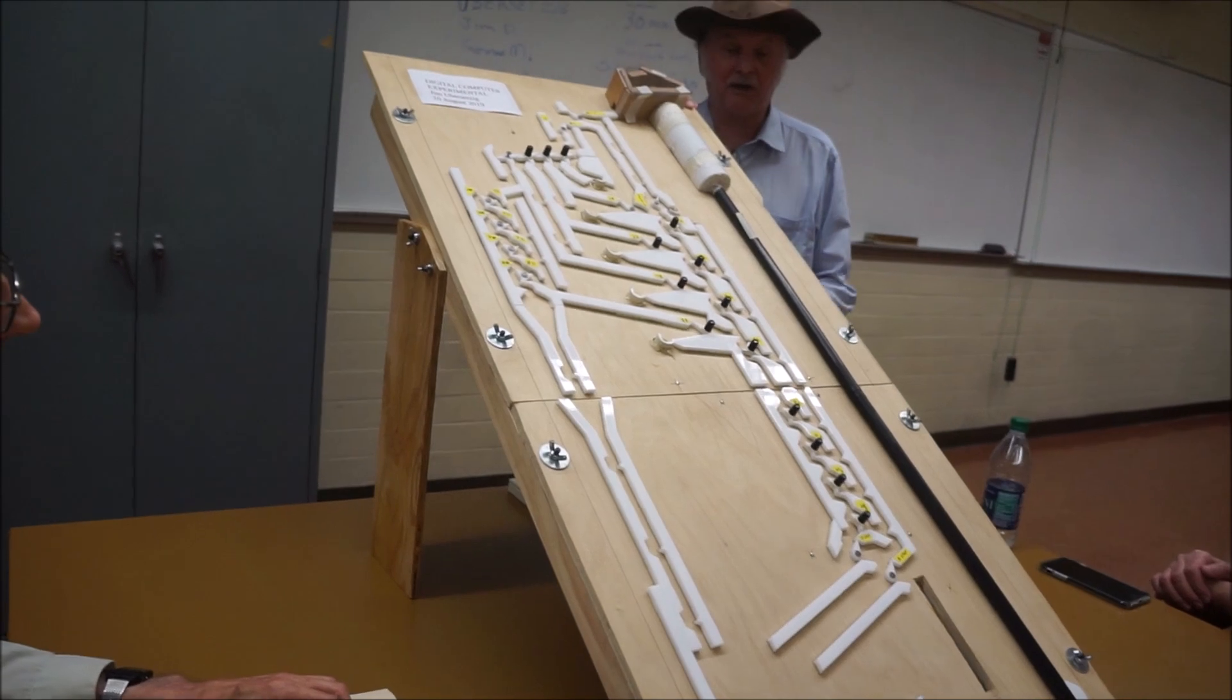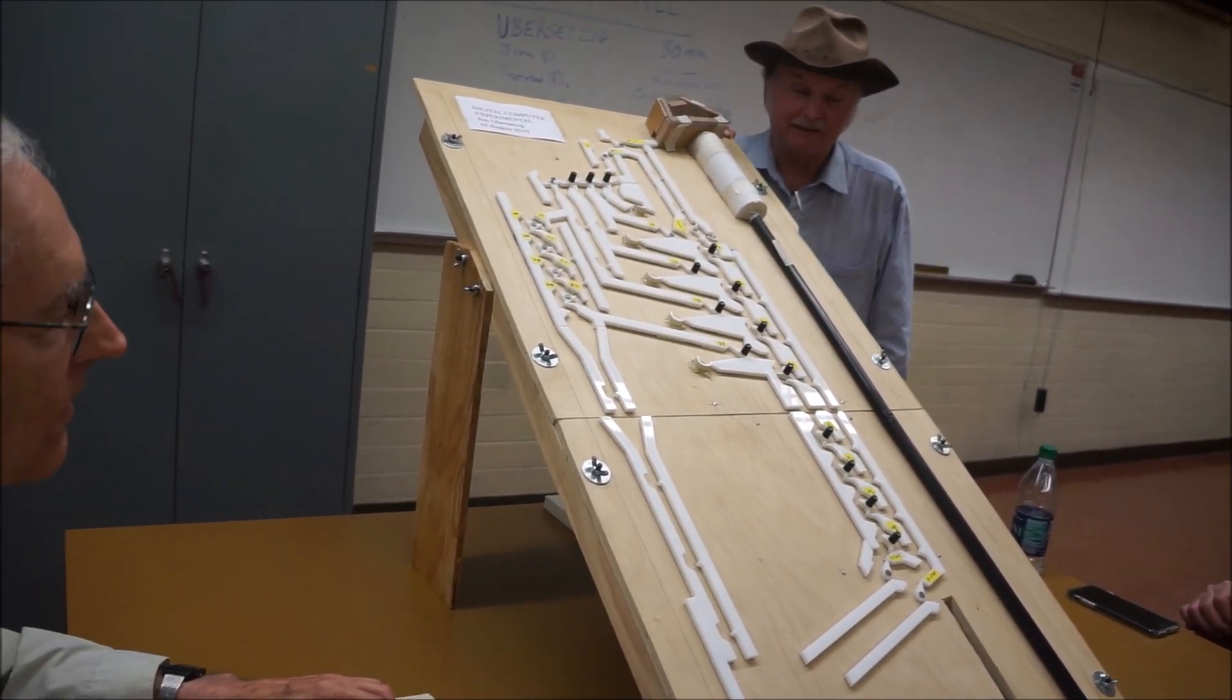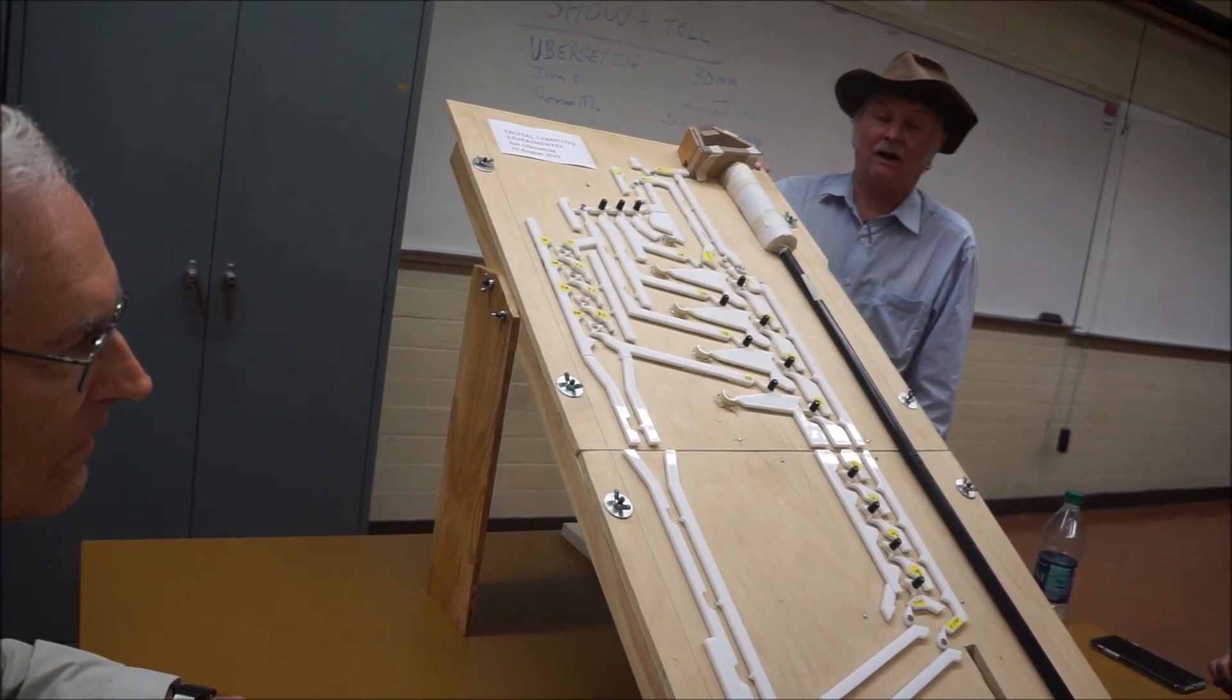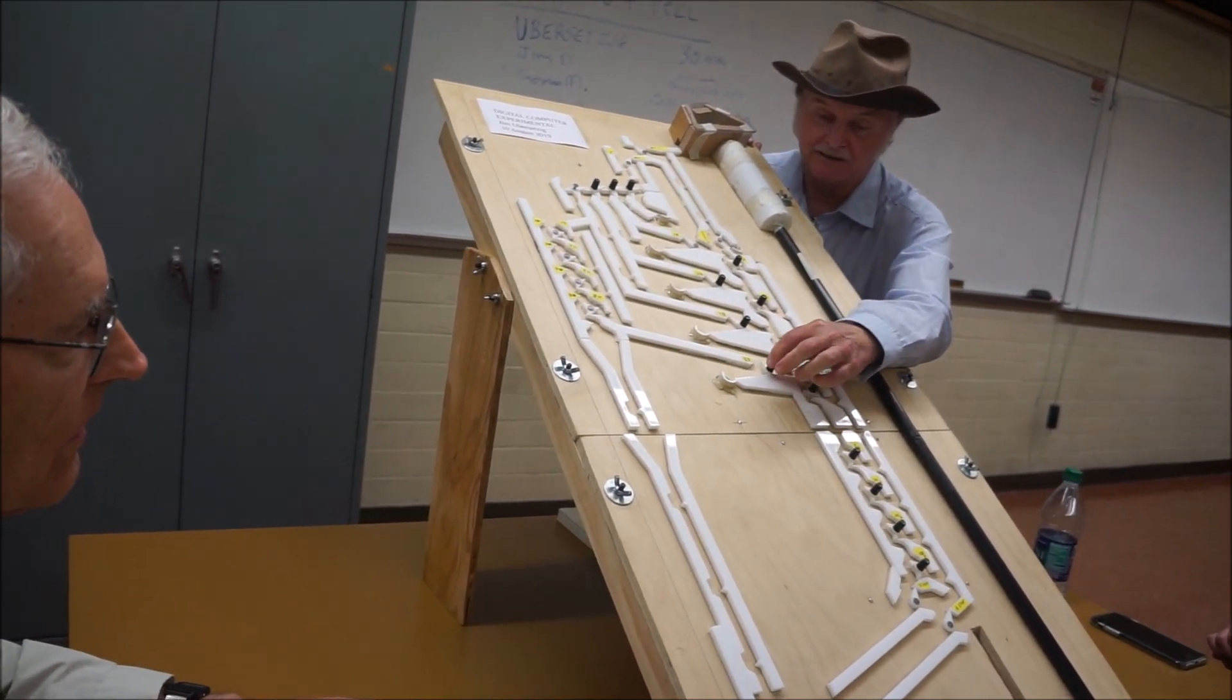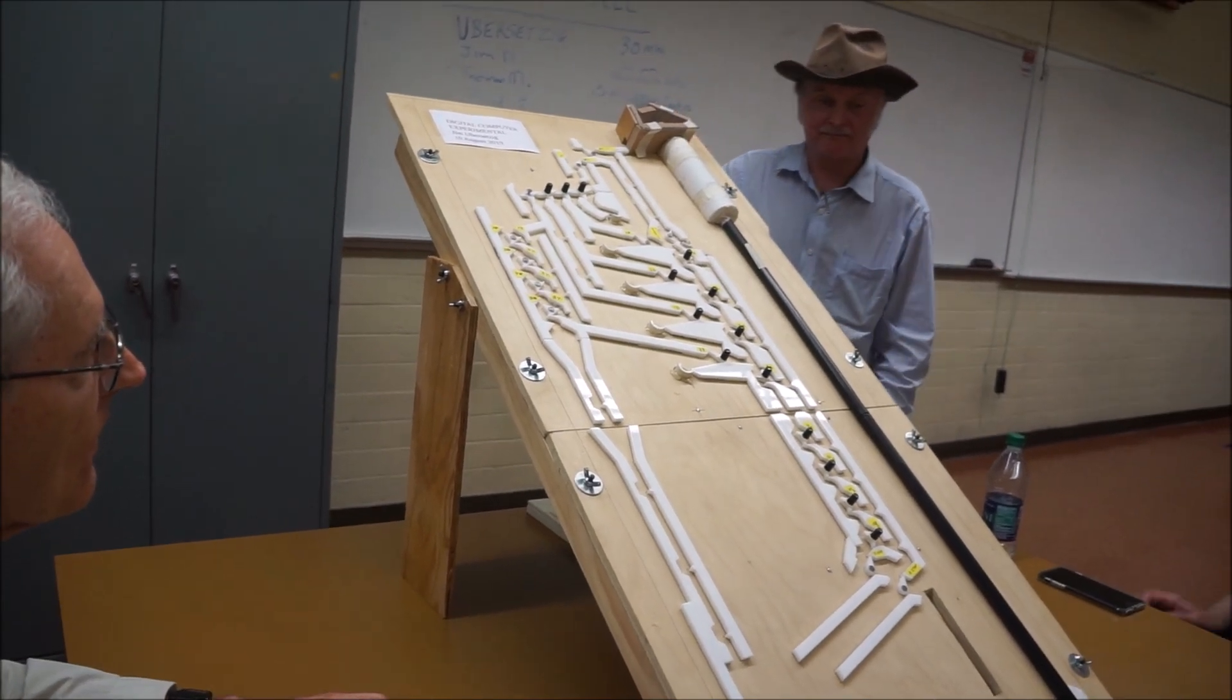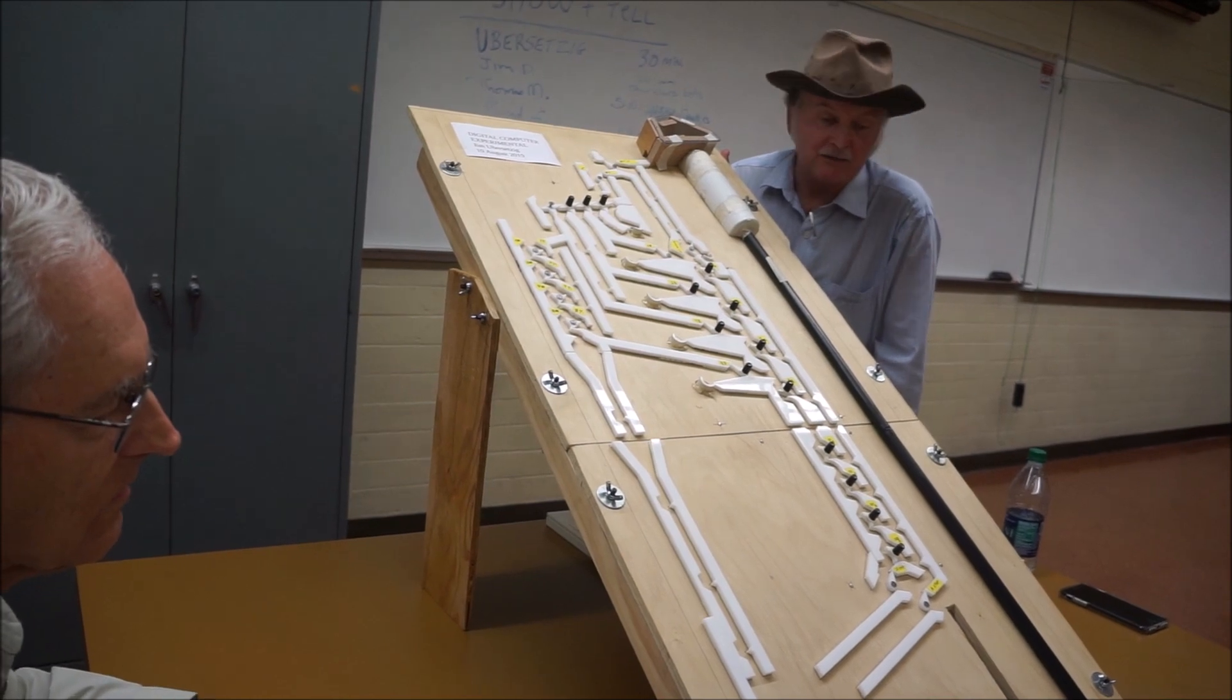Instead of having a clock rate of millions of clocks per second, this machine slows things down to about one clock every three seconds, which allows plenty of time for the student to literally see the action of each logic gate and how it contributes to the operation.